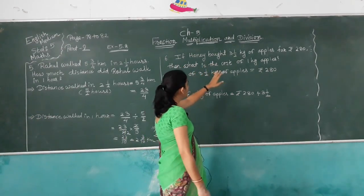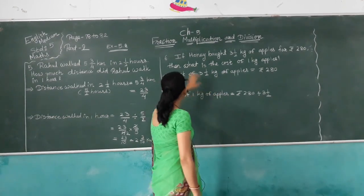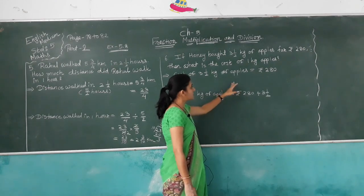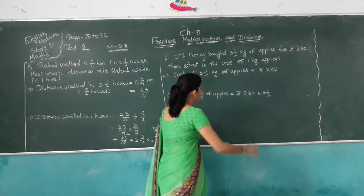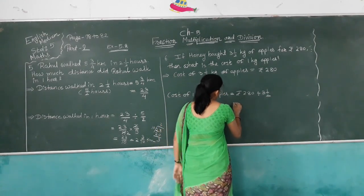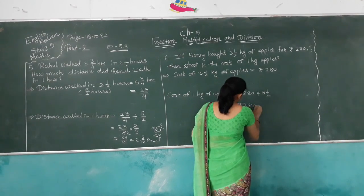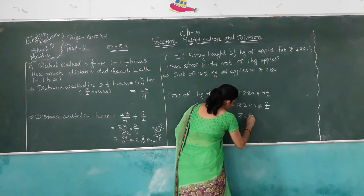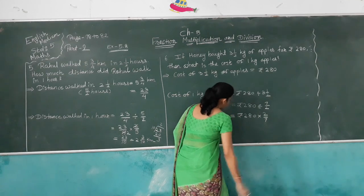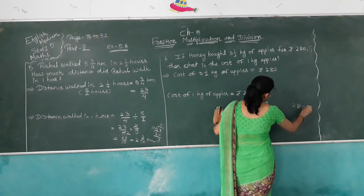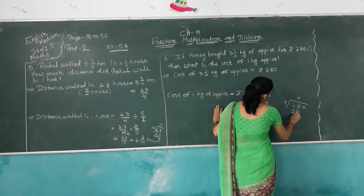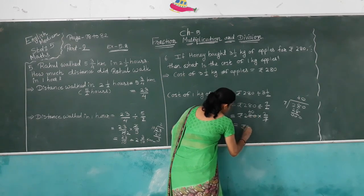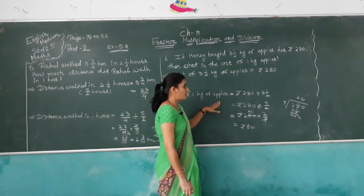Next: Honey bought 3 and 1/2 kg of apples for rupees 280. What is the cost of 1 kg? Cost of 3½ kg = rupees 280. Convert 3½ to improper: 7/2. Cost of 1 kg = 280 divided by 7/2. Using reciprocal method, multiply by 2/7: 280 divided by 7 is 40, multiplied by 2 gives rupees 80. So the cost of 1 kg of apples is rupees 80. Thank you, students.